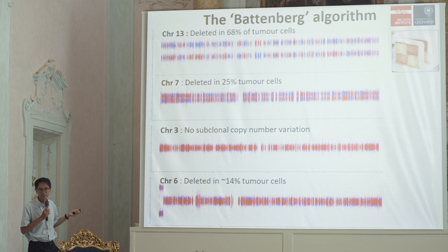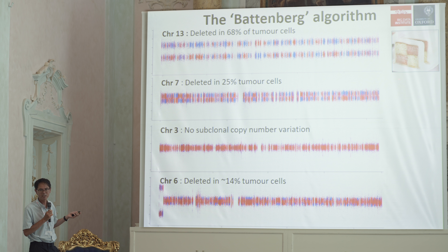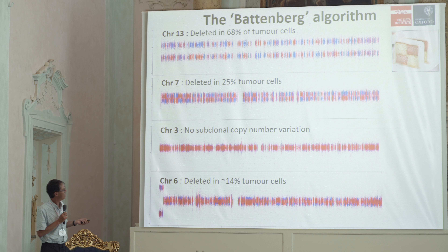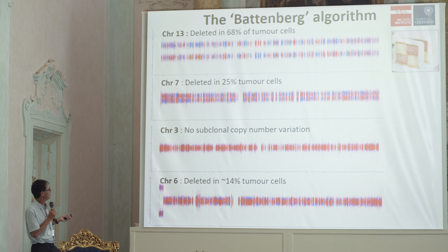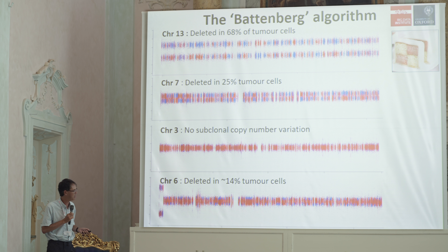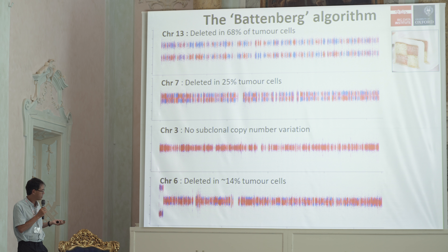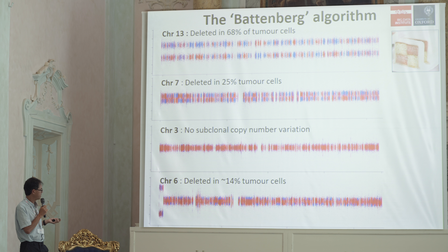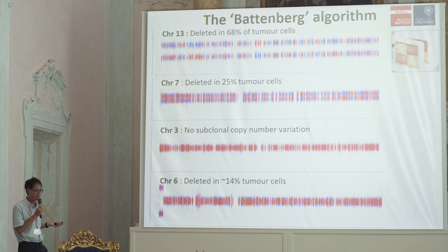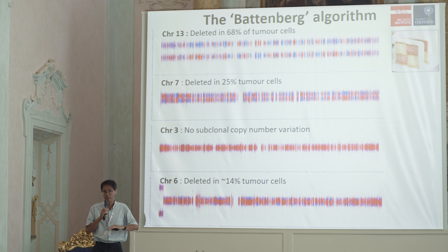This pattern is the reason the algorithm is called the Battenberg algorithm. People from the UK will know this cake — very popular in the UK — which has a chessboard pattern. When we first saw this pattern in the data, we thought it was reminiscent of Battenberg cakes, hence the name. As a negative control, chromosome 3 has no copy number changes, either clonal or subclonal, and the B allele frequency is exactly at 0.5 — red and blue dots lie on top of each other. But on chromosome 6, we saw something unexpected: a separation of blue and red bands, with blue peeping out above the red. That showed us there was actually a deletion in just 14% of tumour cells. With this algorithm, we can get right down to about 3% copy number changes.